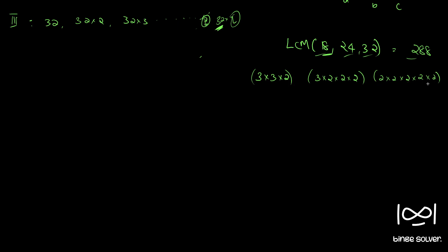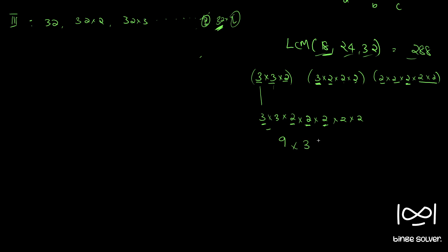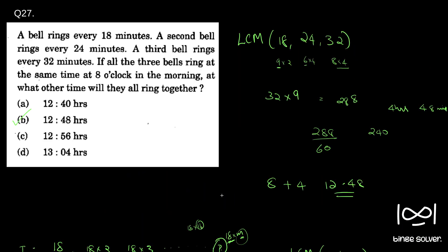Now to find the LCM, we take each factor from each number if we haven't already taken it. So we take 3, then 3, and 2. When we consider 24, the 3 is already there so we skip it, the first 2 is already there so we skip that, but the additional 2 and another 2 we take. When we go to 32, the first three 2's are already there so we skip those, and the two remaining 2's we take. So the LCM is 3×3×2×2×2×2×2 = 9×32 = 288, which is what we wrote earlier.